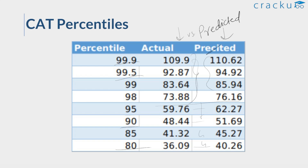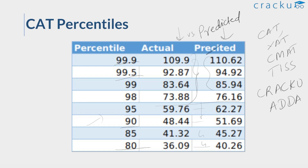This covers the scaling of CAT 2022 VARC, LRDI, and Quant sections across all three slots. We'll also be coming up with a video on B-schools you should target based on your CAT 2022 percentile, including fees and placement details — uploading very soon. If you have any doubts regarding MBA exam preparation such as CAT, XAT, IIFT, CMAT, TISS-NET, and so on, you can post your queries in our student discussion forum Crackuwater, where experts will resolve them. The link is in the description below. Thank you and all the best!